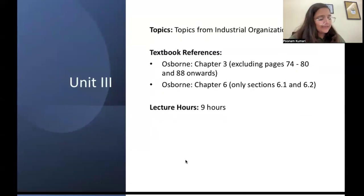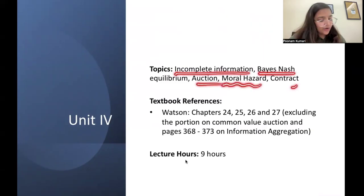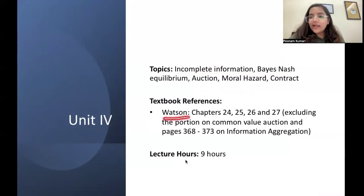Unit 4: earlier you saw complete information games; now you'll discuss incomplete information. Topics include Bayes Nash equilibrium, auctions, moral hazard, and contracts. You'll be entirely dependent on your Watson book: chapters 24, 25, 26, 27, excluding the portion on common value auction and pages 368 to 373 on information aggregation. These specific portions have to be skipped. Lecture hours is 9 hours.